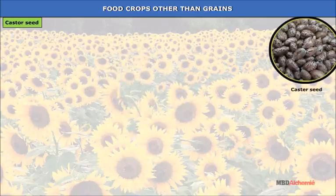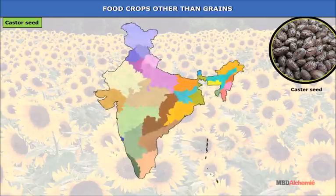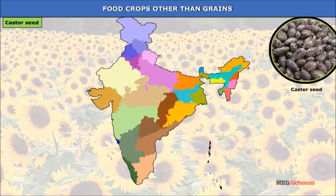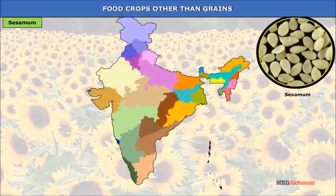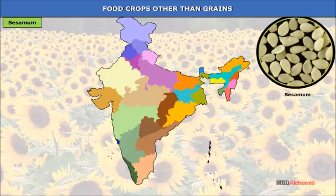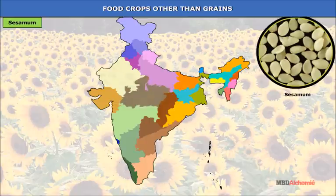Castor seed: Castor seed oil is used for medicines and lubricating. The crop is grown in a warm, dry climate as a Kharif crop and grows well on red sandy soils. The main producers are Gujarat, Karnataka, Andhra Pradesh and Rajasthan. Sesamum: It is also eaten in fried and sweetened form. It needs high temperature of 21°C, moderate rainfall, and well-drained sandy loams. Heavy rainfall and frost are harmful. Uttar Pradesh, Rajasthan, Orissa, Madhya Pradesh and Gujarat are leading producers of sesamum.